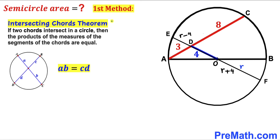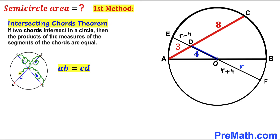Now let's recall the intersecting chords theorem. According to this theorem, if two chords intersect in a circle, then the products of the measures of their segments are equal. In the diagram, chords AC and EF intersect each other at point D, with segments labeled a, b, c, and d, such that a times b equals c times d. We are now going to apply this theorem to our problem.